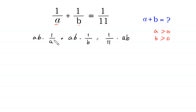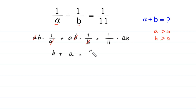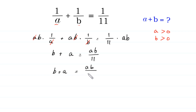Now, this A will be cancelled with this A, and this B will be cancelled with this B. So B plus A is equal to AB over 11.